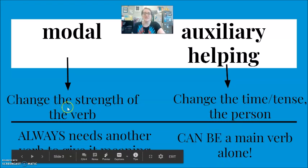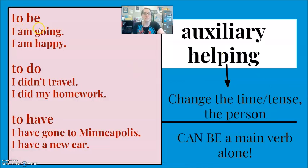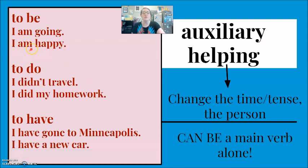Let me dig into these explanations a little deeper. So think about the verb to be. Here we see, I am going. Here the am, the verb be, is connected to the ing, to change the time, to show present continuous. You could change this and say, he is going, to change the person. And a main verb alone. I am happy. Am is the only verb in this sentence. This is the main verb. And this can be the helping verb.